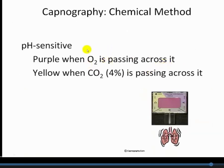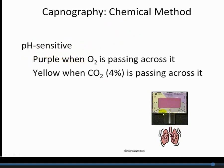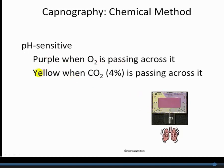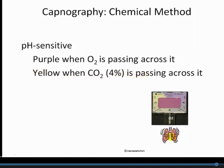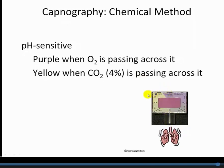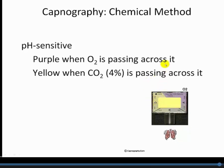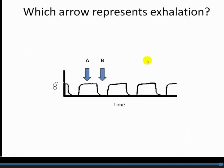One method for measuring CO2 is through a chemical, pH-sensitive approach. The device is purple as air moves through it; when oxygen passes through, it remains purple, but it turns yellow when CO2 — at least about 4% CO2 — is passing across it. This quick color change is a rapid indicator of whether someone is ventilating appropriately and blowing out CO2, providing a relatively efficient way to assess whether the patient is producing CO2.